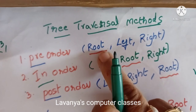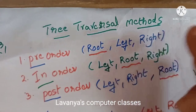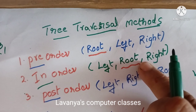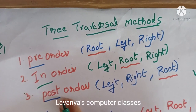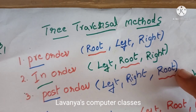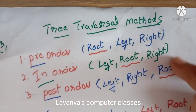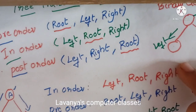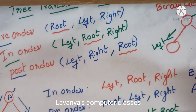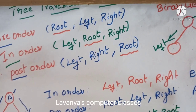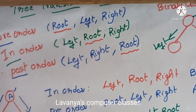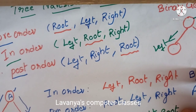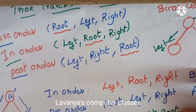In pre-order, root is first; left and right order does not change. In in-order, root is in the middle; again left to right. In post-order, root is last; left and right remain. Thank you for watching. In the next video I will explain tree traversal with one big example. Please share, like, and subscribe to my channel.